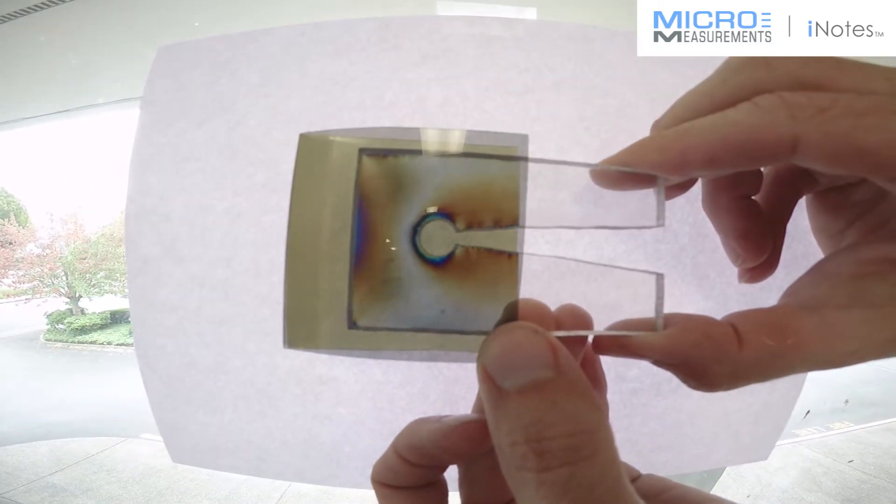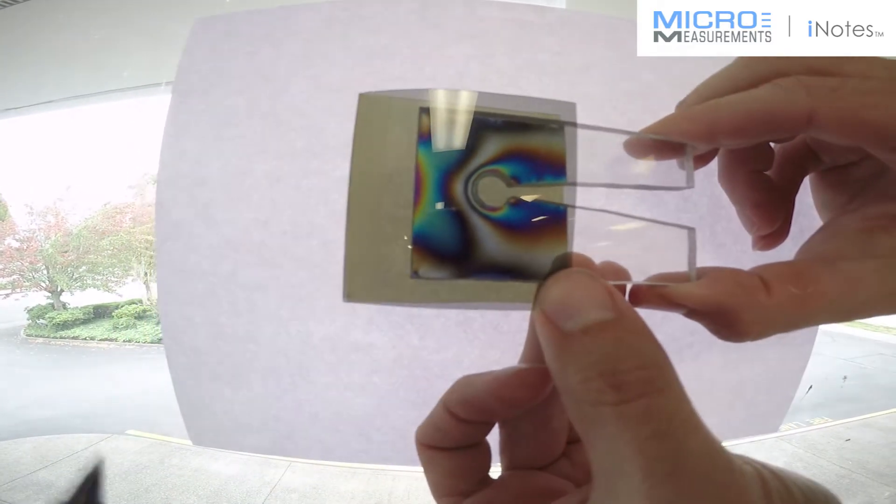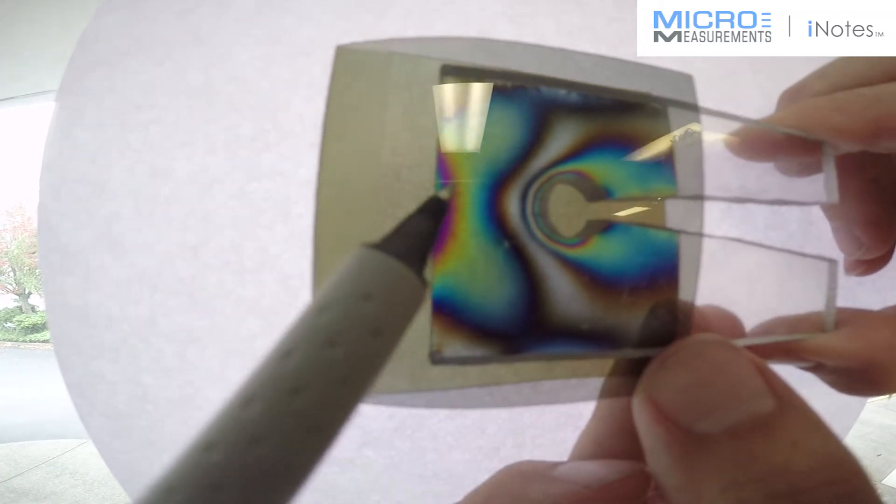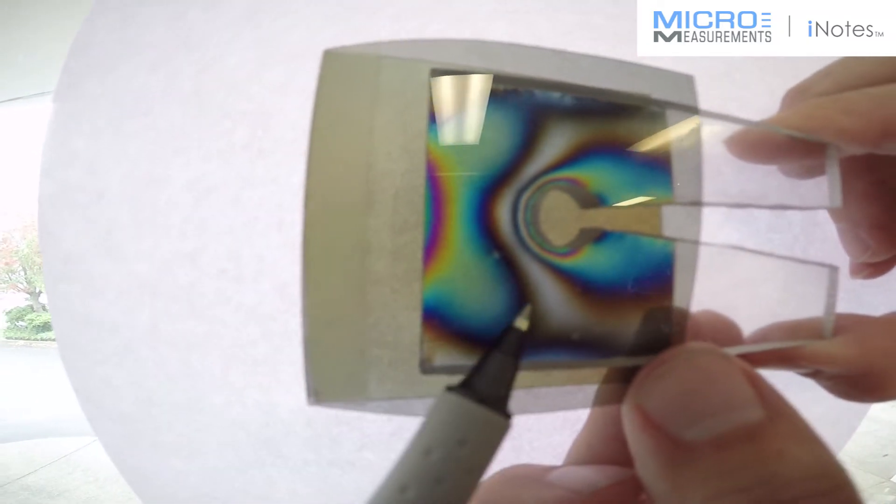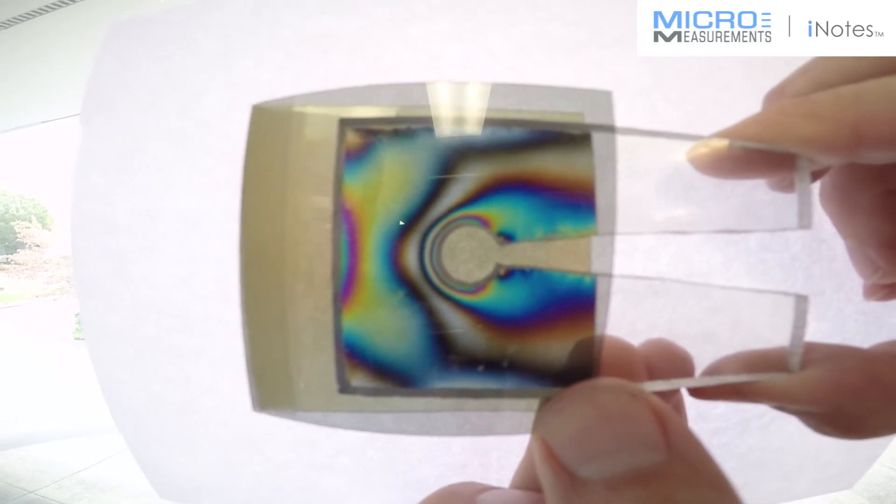Where should we drill a hole if we wanted to allow a wire feed through this bulkhead? Well, I'd say not here, but maybe down in here? Yep, that's a good area where there's no stress.